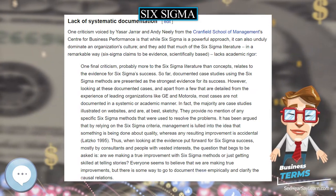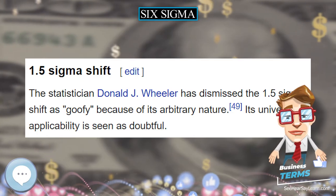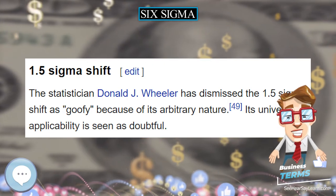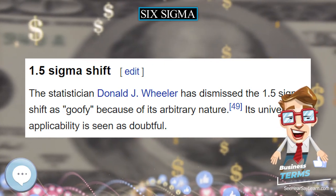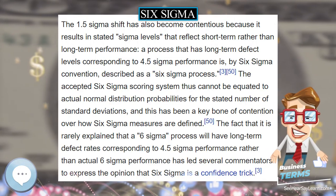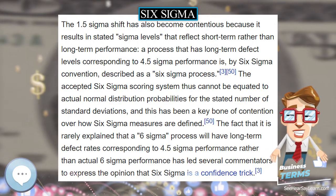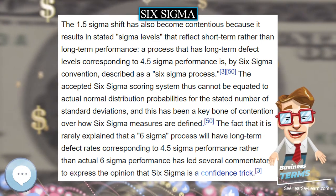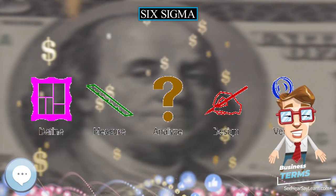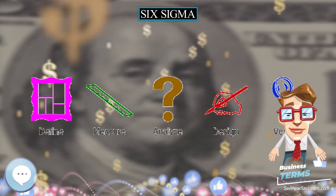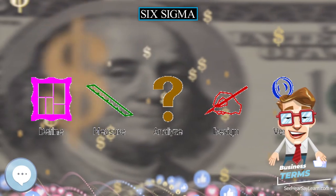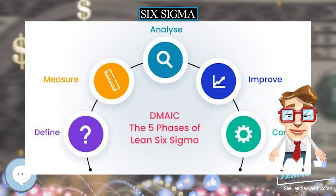Within the individual phases of a DMAIC or DMADV project, Six Sigma utilizes many established quality management tools that are also used outside Six Sigma. The following table shows an overview of the main methods used.